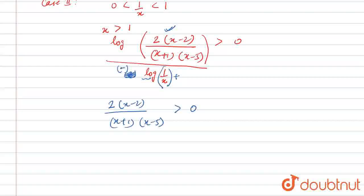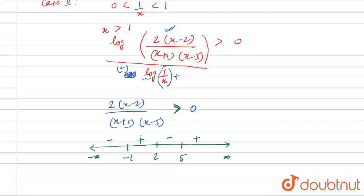For solving this condition, we will make a number line. The extreme points minus 1, 2, and 5 are drawn on the number line. When we put 5, this term will be positive, this will be also positive, and this will be also positive. So 5 to infinity is positive. Now 2 to 5 is negative, minus 1 to 2 is positive, and minus infinity to minus 1 is positive. We only consider the cases when this term is positive, so x is belonging to (minus 1, 2) union (5, infinity).